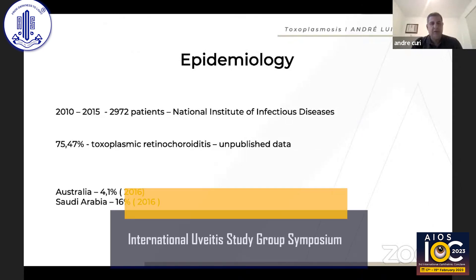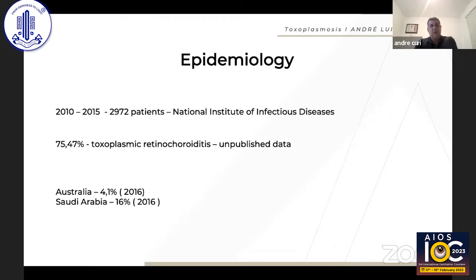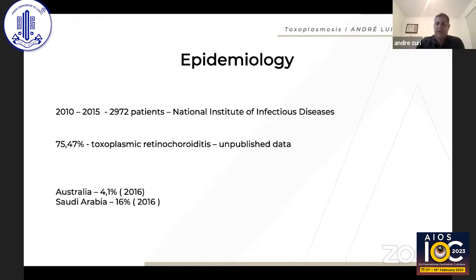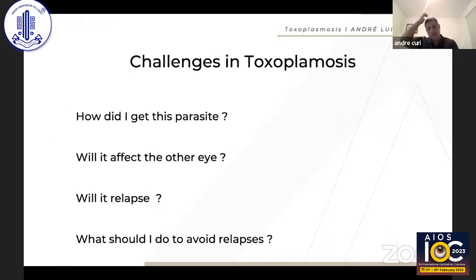Ocular toxoplasmosis is quite common in Brazil. In a survey from 2010–2015, we saw 2,009 to 72 patients at the National Institute of Infectious Disease, and almost 75% had toxoplasmic retinochoroiditis. Compared with Australia and Saudi Arabia, Brazil has many more cases of toxo.